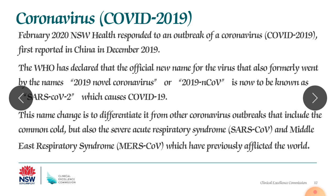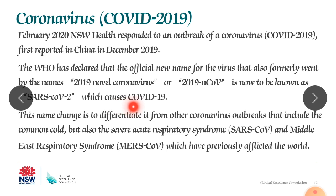In February 2020, the national health authorities reported the outbreak first identified in China in December 2019. WHO officially named the virus SARS-CoV-2, which causes COVID-19. This name change differentiates it from other coronavirus outbreaks including the common cold, Severe Acute Respiratory Syndrome (SARS), and Middle East Respiratory Syndrome (MERS), which previously afflicted the world.